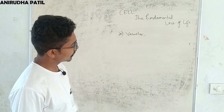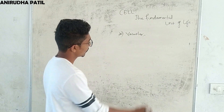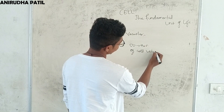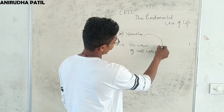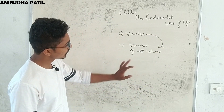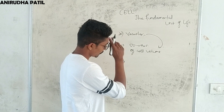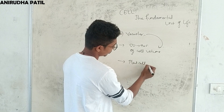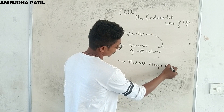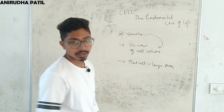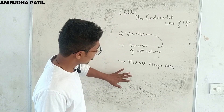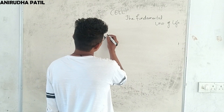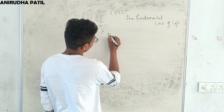Vacuoles are present in both plant and animal cells. In plant cells they occupy a large area, while in animal cells they are small and cover only a small area. Vacuoles act like sacs and function as storage elements.